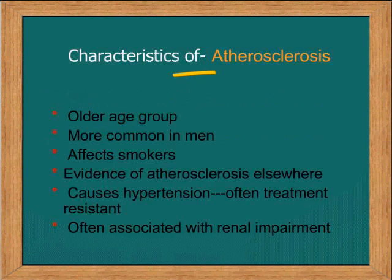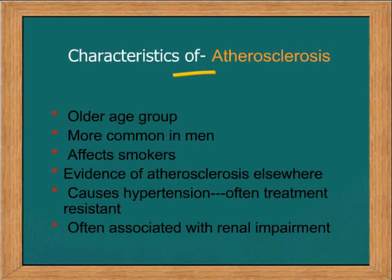The two common diseases are atherosclerosis and fibromuscular dysplasia. Atherosclerosis is normally seen in the older age group; it is more common in men and affects smokers. You will generally see evidence of atherosclerosis in other vessels. These patients present with hypertension which is resistant to treatment and they are often associated with renal impairment.